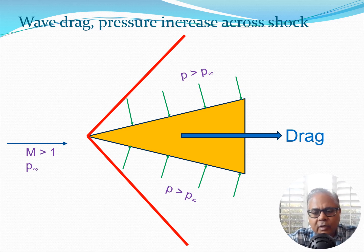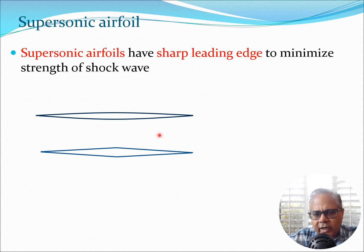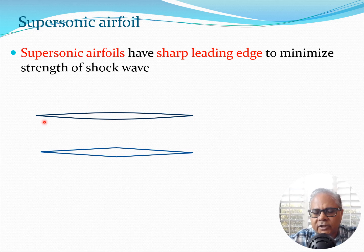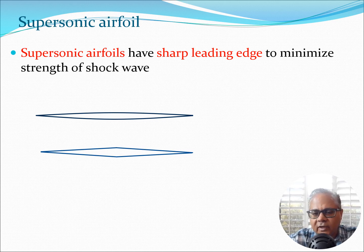Wave drag is a new component of drag in that it is happening primarily due to the high Mach number at which we are flying this particular wedge. In supersonic flow you typically use airfoils which look very different from what we have seen before. You use supersonic airfoils which have a sharp leading edge, and this helps you to minimize the strength of the shock wave. So it's like a curved airfoil with sharp edges, or a wedge-shaped airfoil with sharp edges — this kind of sharp edge will minimize the strength of the shock wave. We want a very thin body with a sharp edge to create a weaker shock.